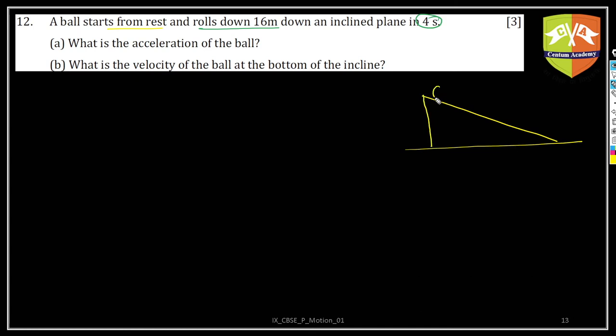There is a ball which is rolling down the incline plane. This is the initial velocity, and it starts from rest. So instead of V you should write U. Initial velocity is 0. At this point T is equal to 0, starts rolling at T equals to 0. And at T is equal to 4 seconds, what is happening? The ball is here.